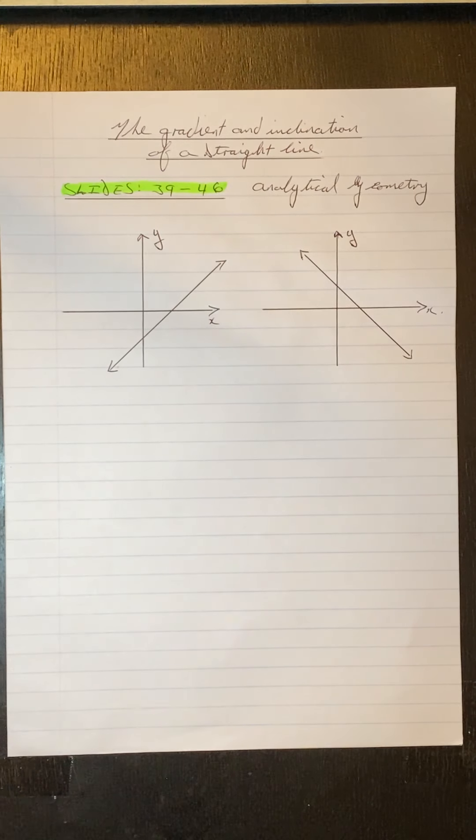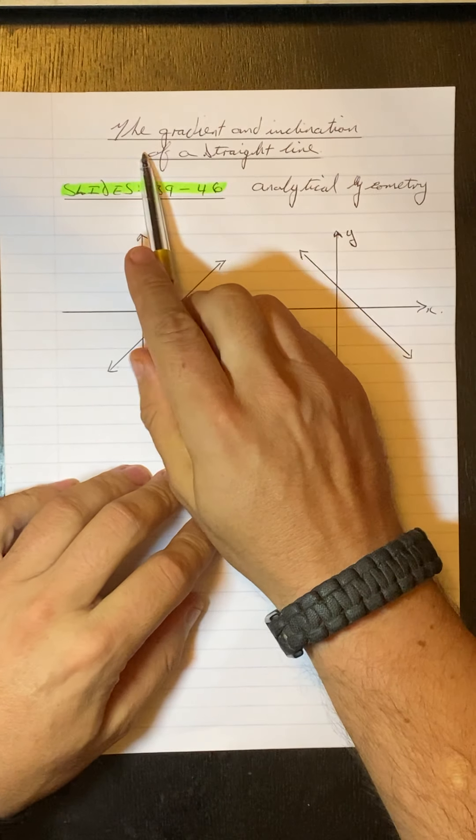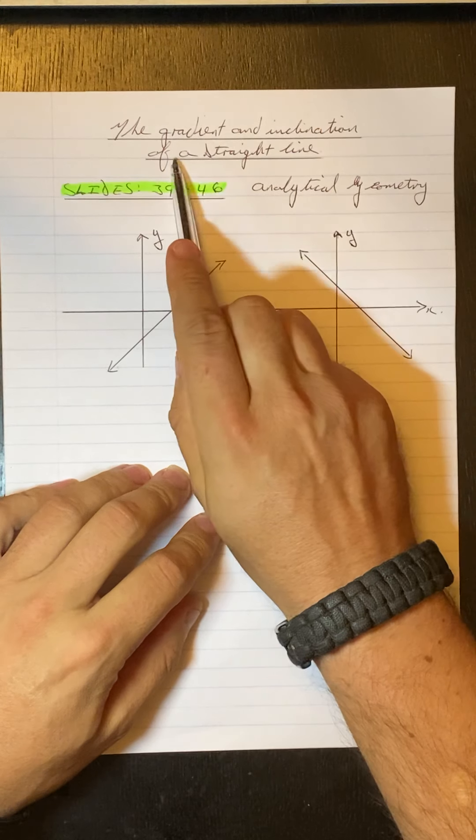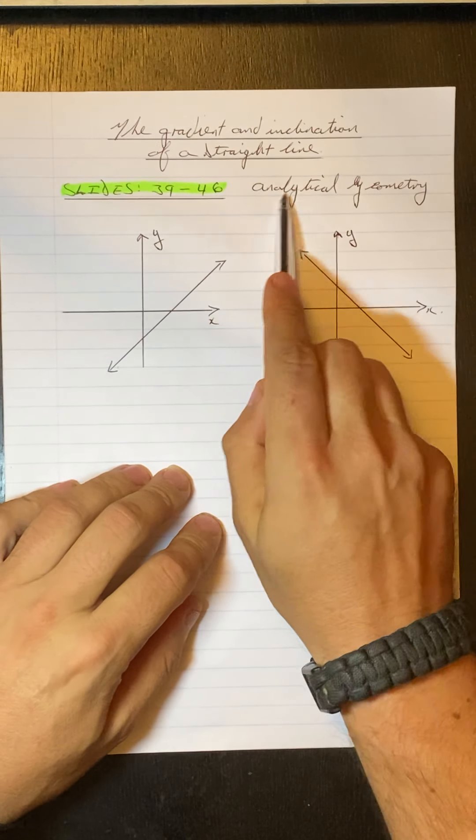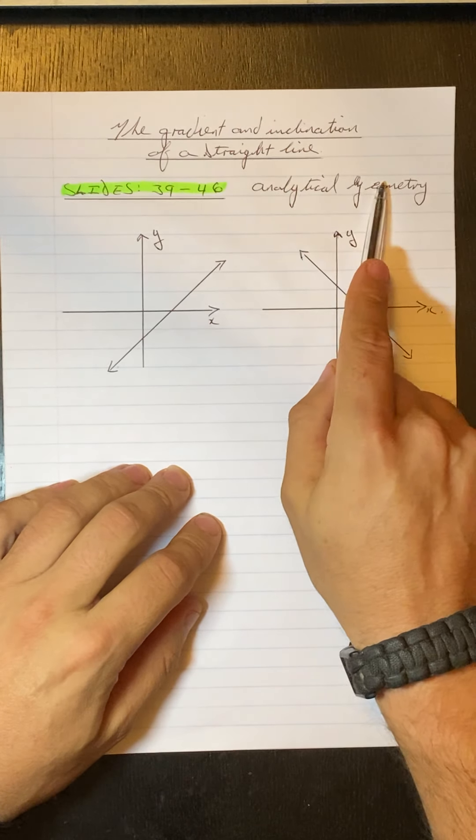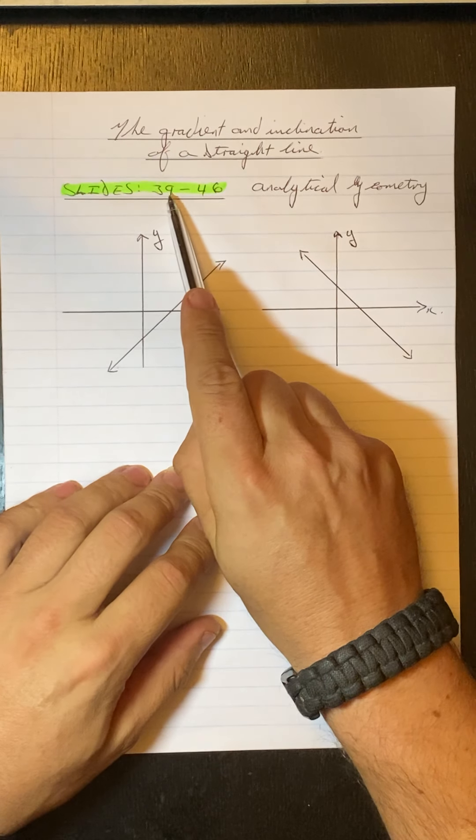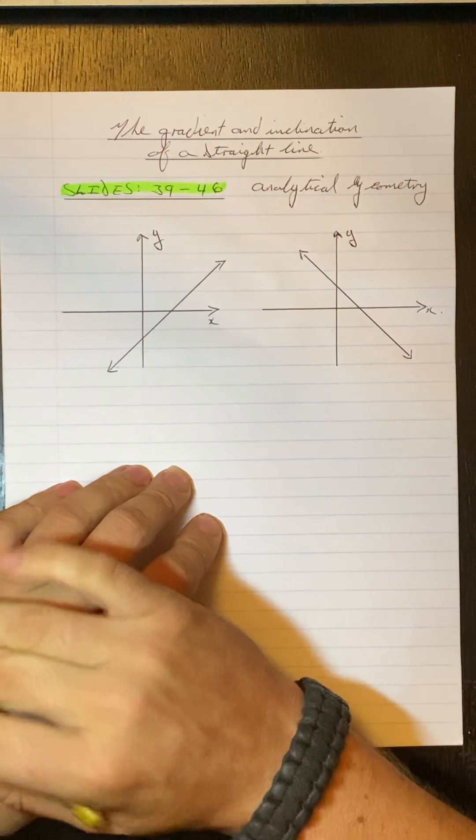Hello grade 11s. Today we will be starting with the gradient and inclination of a straight line. It's from the slide's analytical geometry and the slide numbers will be 39 to 46.